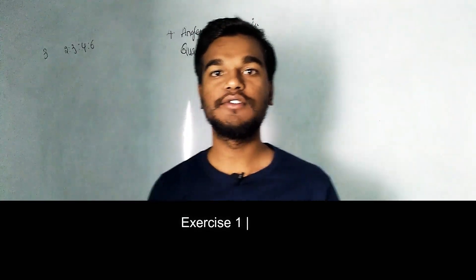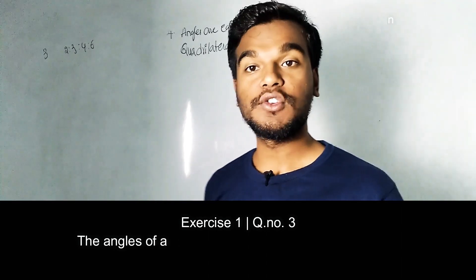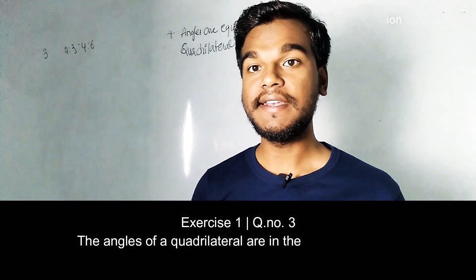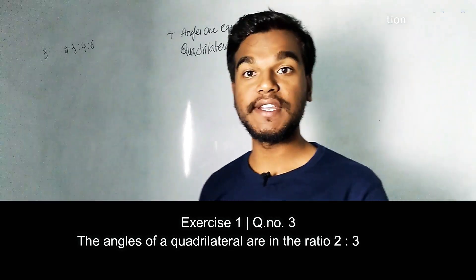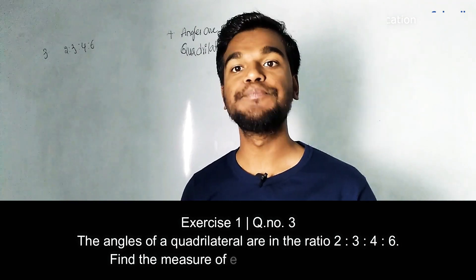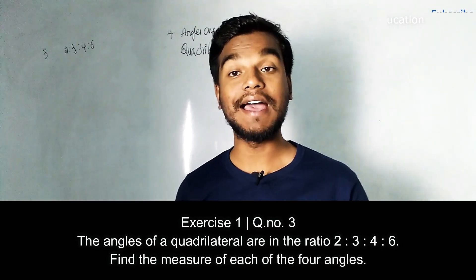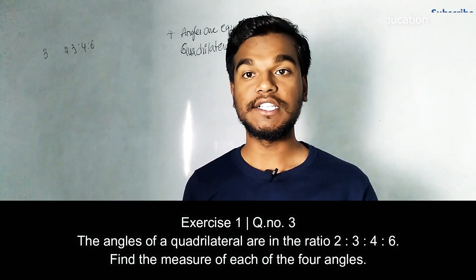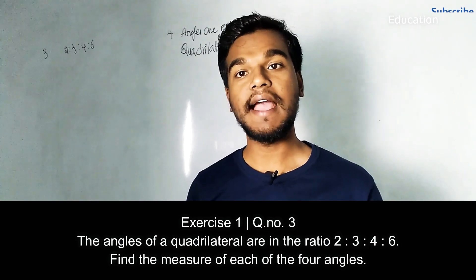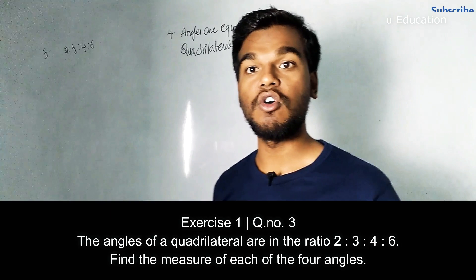Hello viewers. In this module we are going to discuss the solutions for the third and fourth questions in the first exercise on quadrilaterals. In the third question, the given angles are in the ratio 2:3:4:6 and we have to find the angles inside the quadrilateral. In the fourth question, all the angles are the same and we have to draw that quadrilateral in the notebook and find the angles.